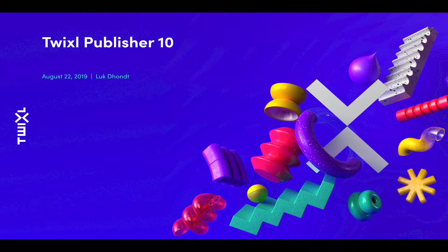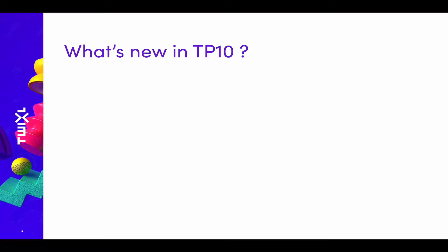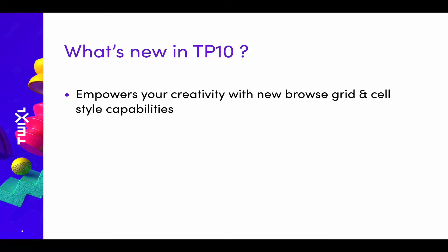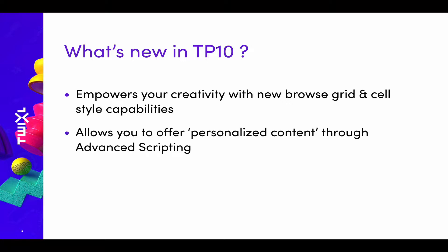Thank you for participating in today's webinar, which is all about Twixl Publisher 10, a version that we've had in beta since early July and that we plan to release by early September. There are two new main features: the first is about empowering your creativity with new options to display cells on the browse grid and new cell style capabilities. The second is about allowing you to offer personalized content through a feature we call advanced scripting.